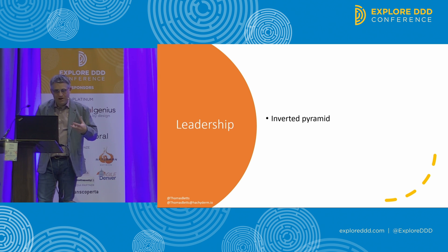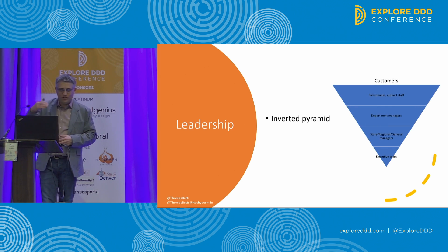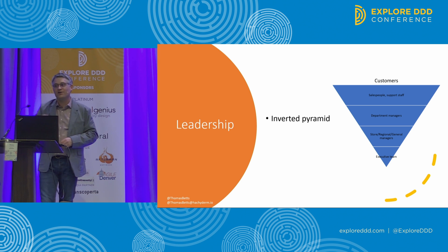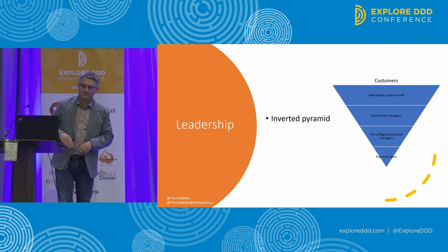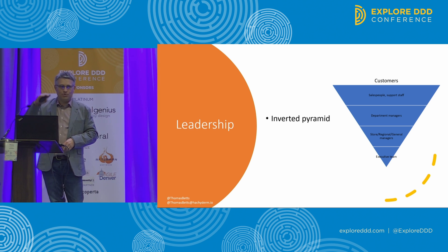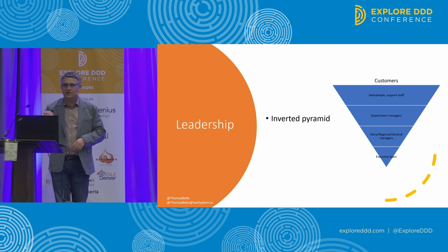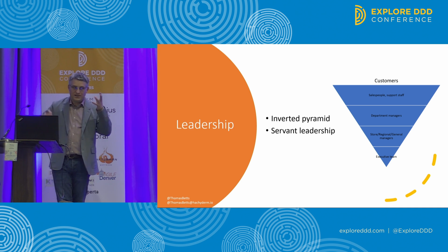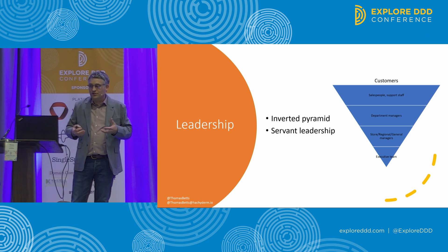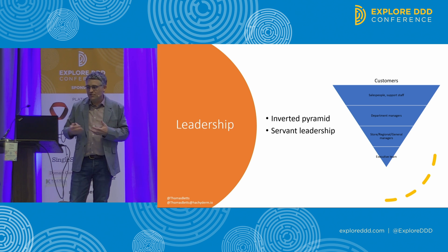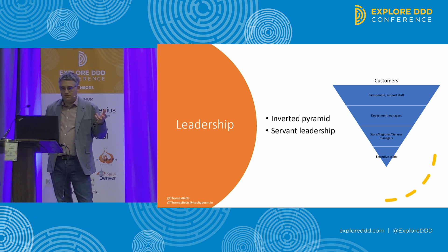Nordstrom is a high-end department store known for impeccable customer service. How do they embody that? They have an inverted pyramid — their org chart doesn't have the CEO at the top; the CEO is at the very bottom. The customers are at the top, and the closer you are to the customer, the higher you are. That idea of servant leadership applies in any situation. As an architect, I don't get to be hands-off, draw the diagram, throw it over the wall and say 'go implement it.'